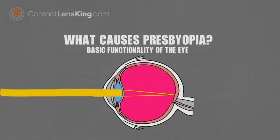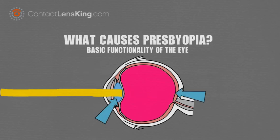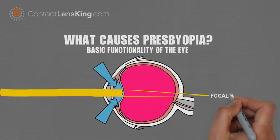If an aberration or anomaly occurs at any of these eye parts, vision will be affected. When the eye's natural lens flexibility decreases and is unable to properly respond to focusing on nearby objects, it results in presbyopia.